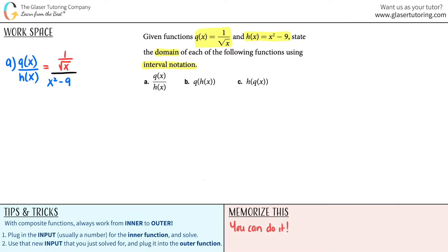For a domain, all you're looking for is basically exclusion values that would not make this function have an actual value. You should worry about two exclusion principles: there are exclusion values whenever you have a square root of a number, and there are exclusion values whenever you have a value x in the denominator.